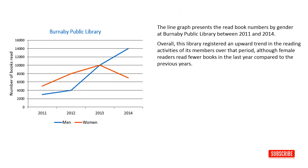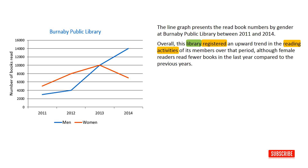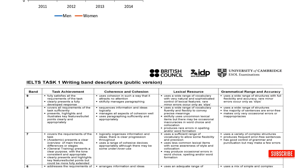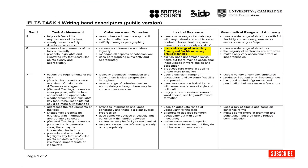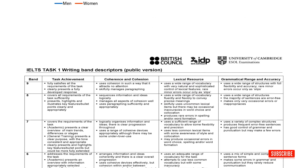Now let's have a look at the overview paragraph: 'Overall, this library registered an upward trend in the reading activities of its members over that period, although female readers read fewer books in the last year compared to the previous years.' Here I showed my vocabulary on the topic: 'library,' 'registered,' 'reading activities,' 'members,' 'readers,' 'read,' 'books' — all these words are related to the word 'library.' In the public version of writing task 1 band descriptors, it is written that candidates who use a wide range of vocabulary fluently and flexibly to convey precise meanings get band 8 for their lexical resources. This is one of four criteria on which your writing task will be evaluated.